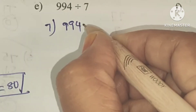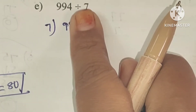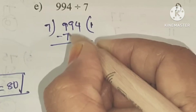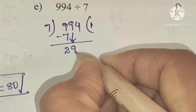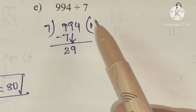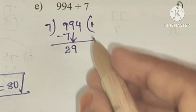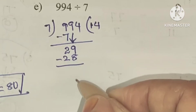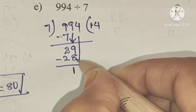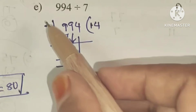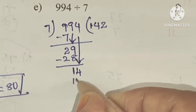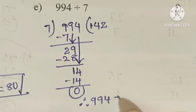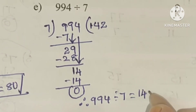E: 994 divided by 7. First number 9: 7 ones are 7, after subtracting 9 minus 7 equals 2. Next number 9 comes down making 29. In the 7 times table, 7 fours are 28 — closest to 29. After subtraction we get 1. Next number 4 comes down making 14: 7 twos are 14, after subtraction remainder 0. So 994 divided by 7 equals 142.